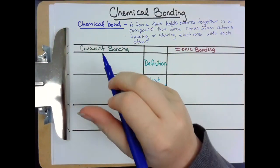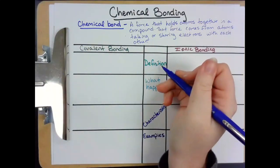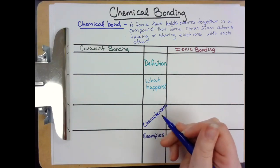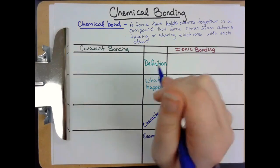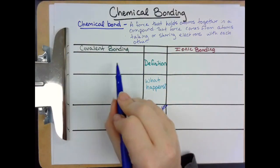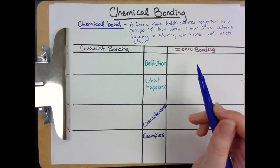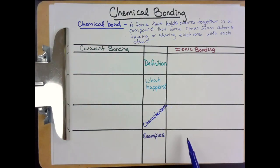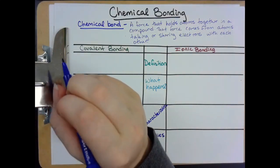We're going to talk about covalent bonding first. We'll do the definition first, then talk about why covalent bonds happen and how they happen, then some characteristics of covalent compounds, and then a couple of examples. We'll do the same thing for ionic bonding on the other side. This chart in your notes is going to be a compare and contrast. If you haven't already drawn this chart, go ahead and pause the video and draw it now.